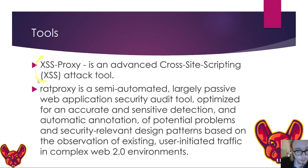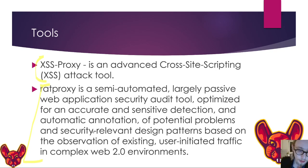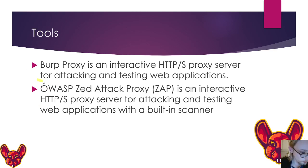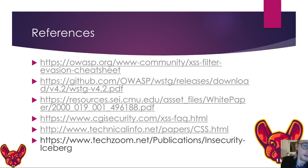XSS Proxy is an advanced cross-site scripting attack tool — basically a proxy that sits between the attacker and the target and analyzes requests. Rat Proxy is a semi-automated, largely passive web application security audit tool — essentially a scanner that statically analyzes JavaScript files, does semi-automated annotation, and looks for potential security problems using pattern-based detection, marking them for you to review. Then you have your man-in-the-middle proxies — Burp and OWASP ZAP. In practice, there's not a huge difference between them; you can use either or both in conjunction, especially for cross-site scripting.